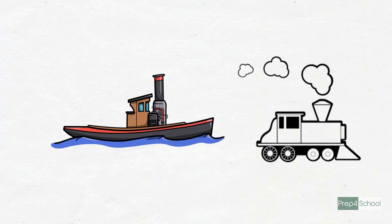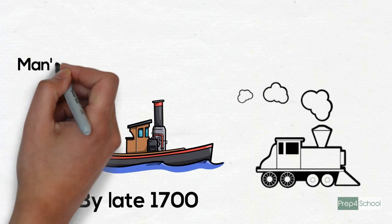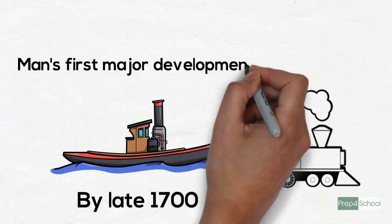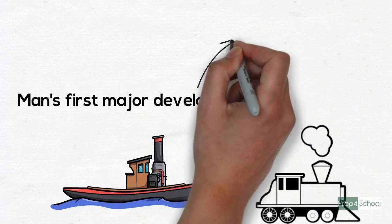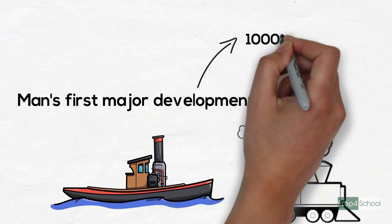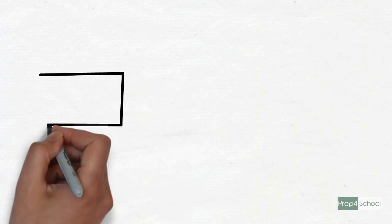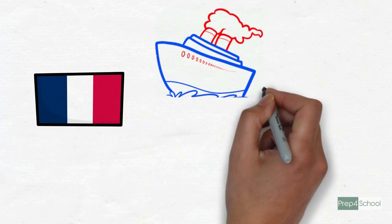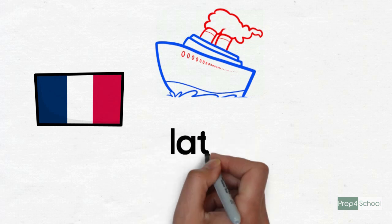By the late 1700s, the steamship was man's first major development in traveling great distances since the creation of sail thousands of years before. The French were the steamship's earliest pioneers of the late 1700s.